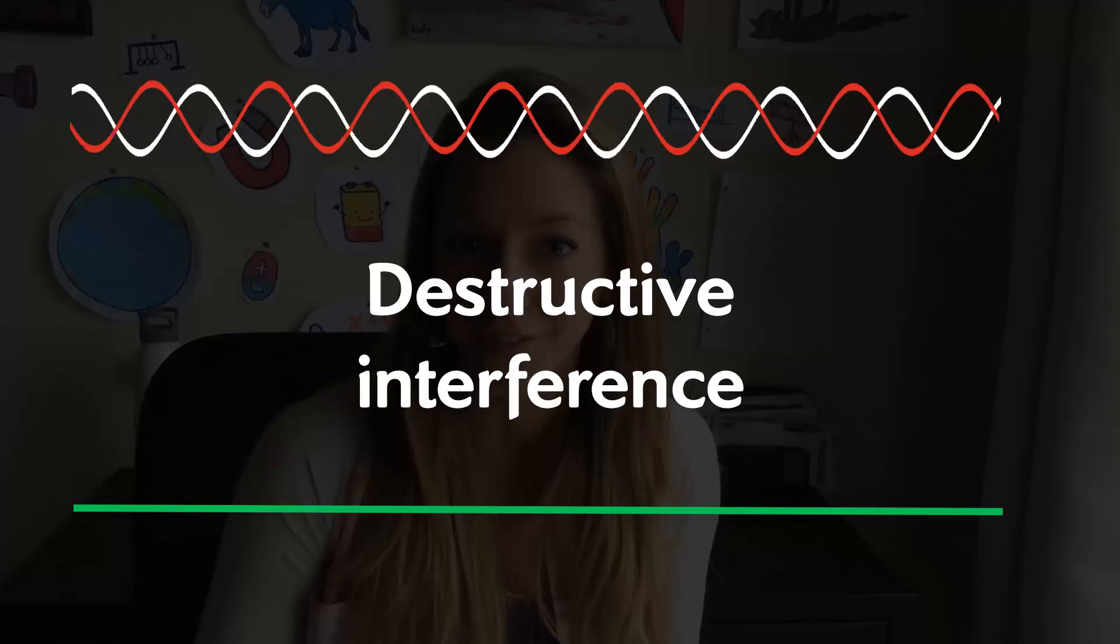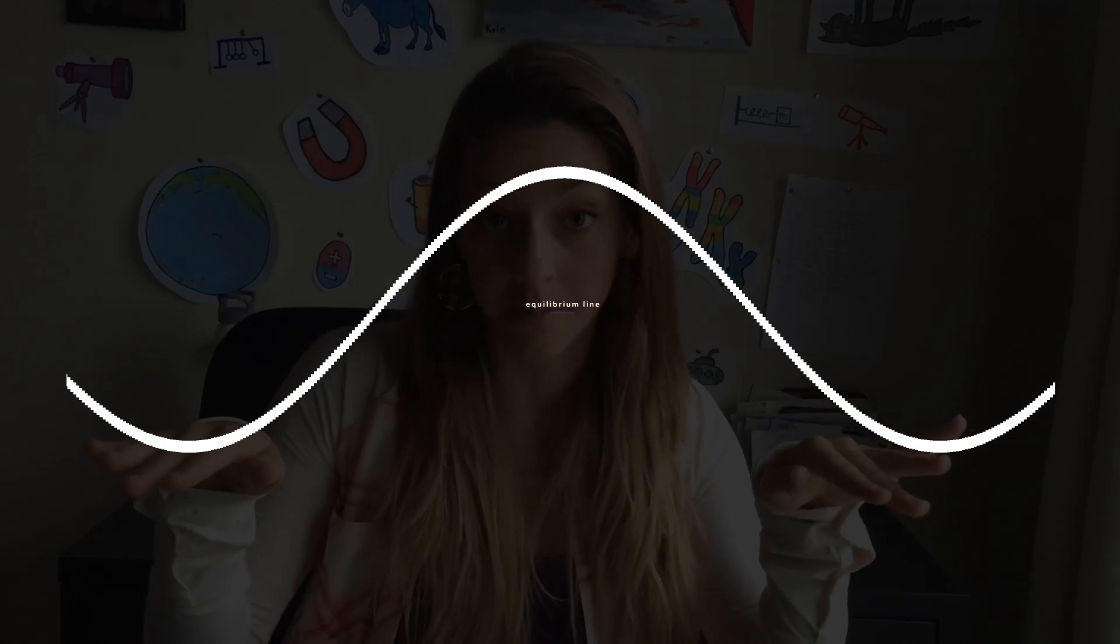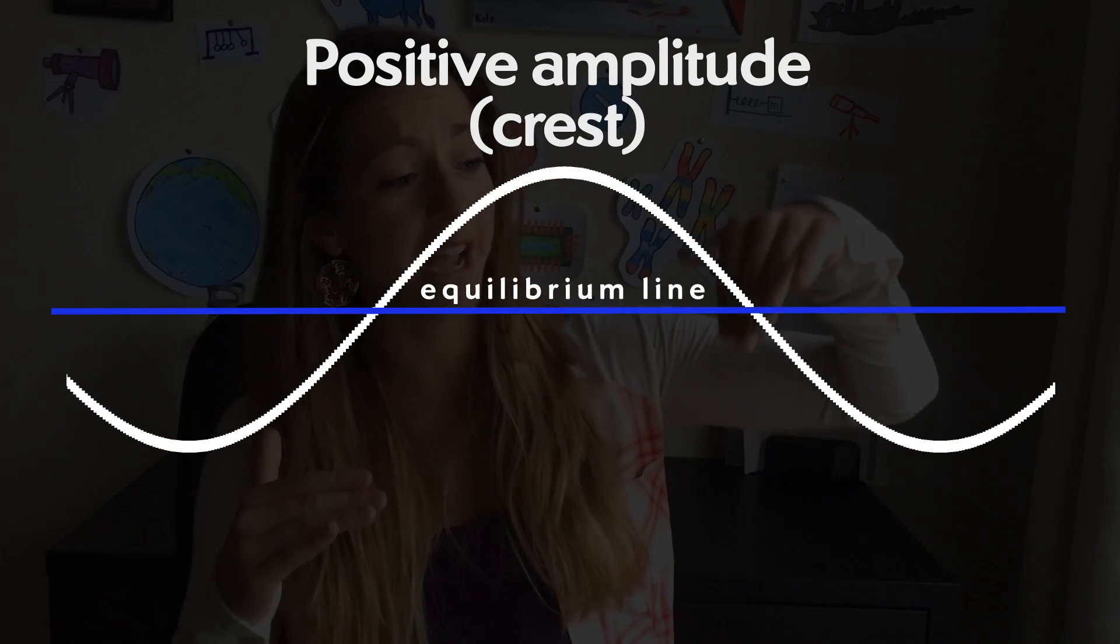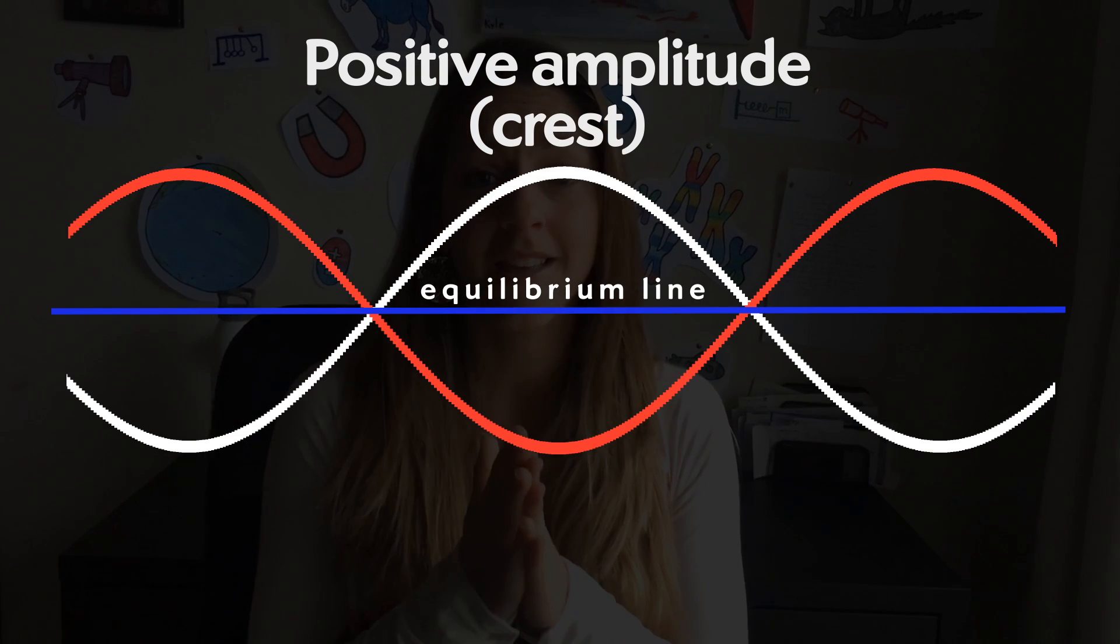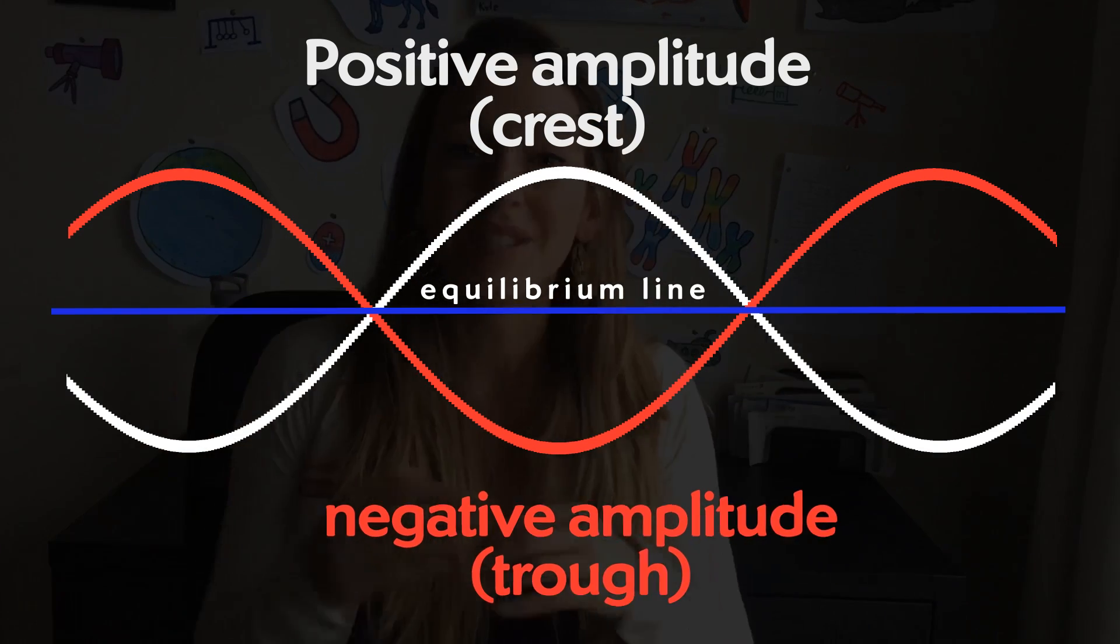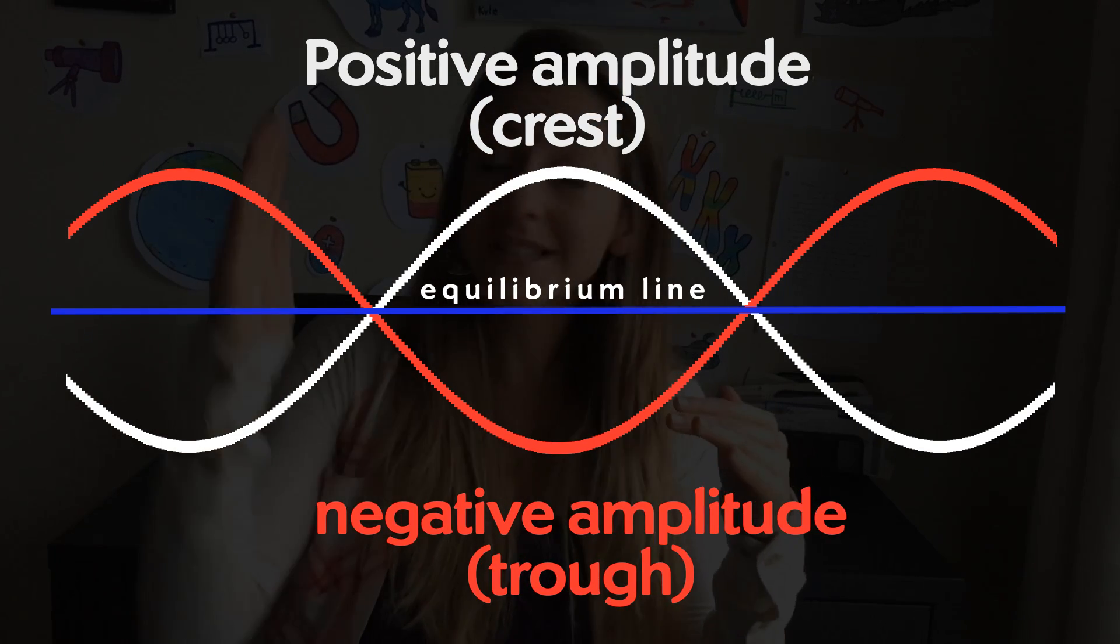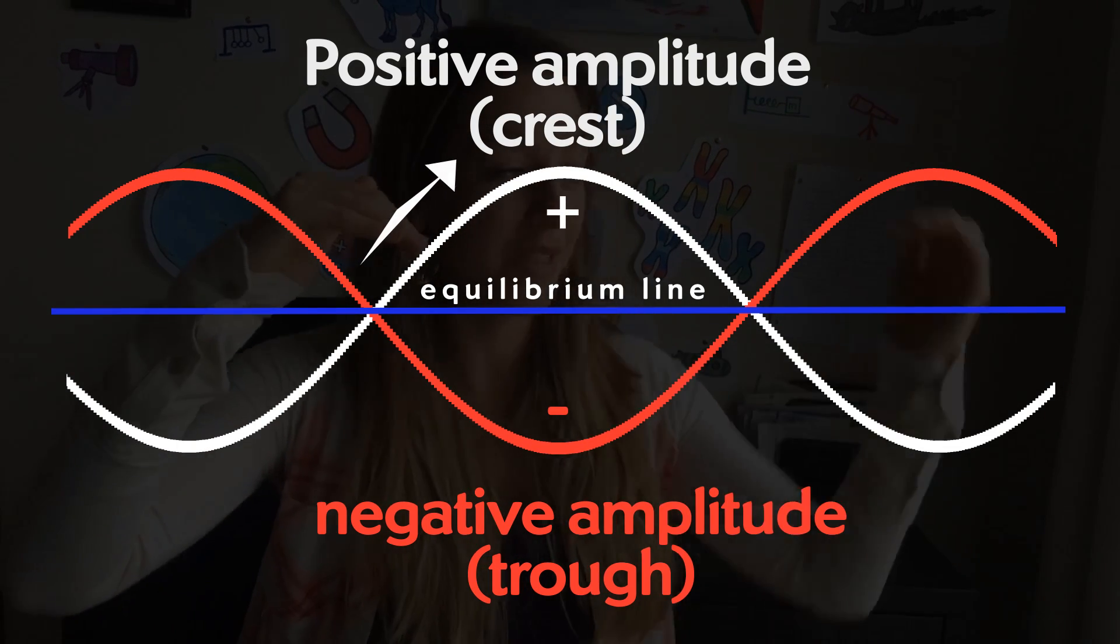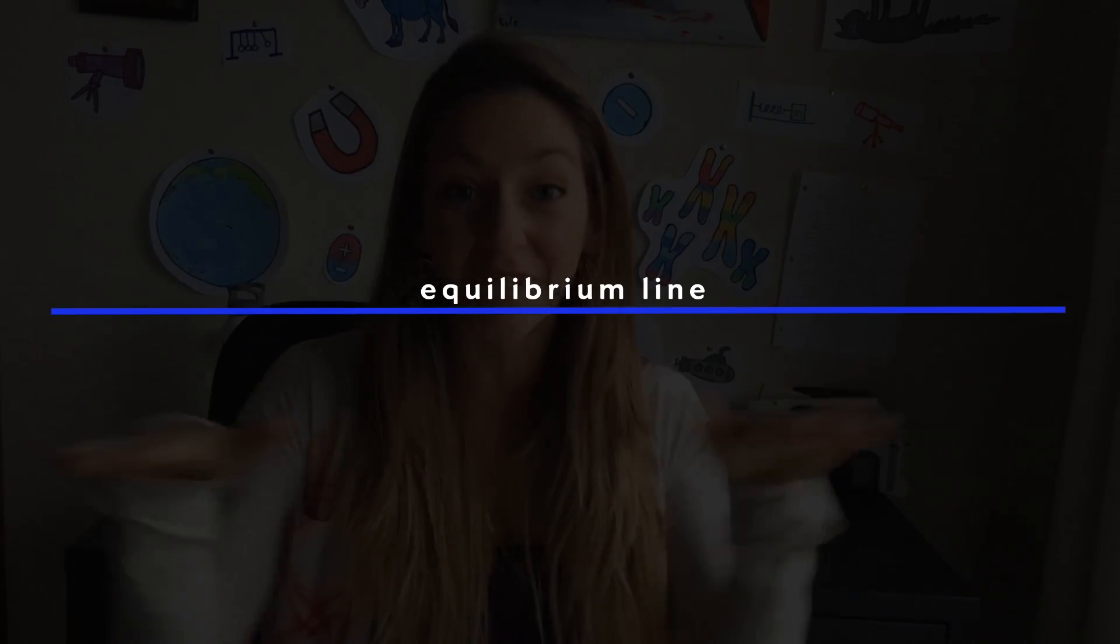Now the way it works is that one wave goes up above your flat equilibrium line. Let's say that one has a positive amplitude, and the other wave dips down below your equilibrium line. We'll say that one has a negative amplitude. Now when those waves meet, your positive amplitude and your negative amplitude cancel. It's like the part going up and the part going down cancel each other and they're flat. This is called destructive interference.